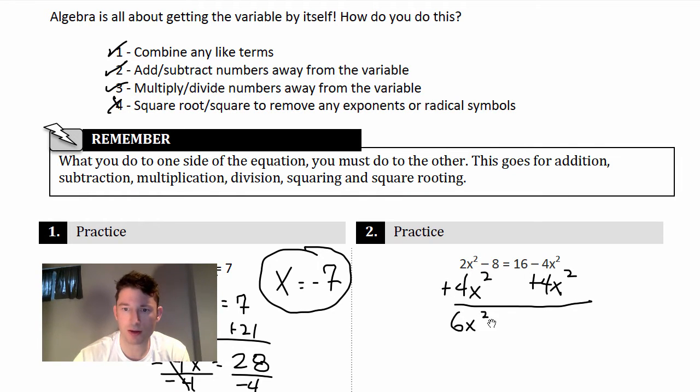So we get 6x² - 8 = 16. Now what do you do? Well, we want to get all the numbers on the other side, so this is a negative 8, so I'll add 8. So we're adding and subtracting numbers away from the variable.